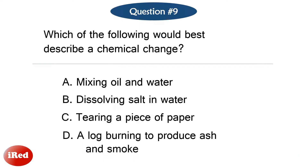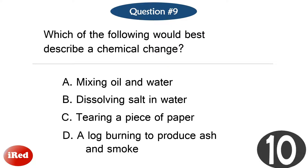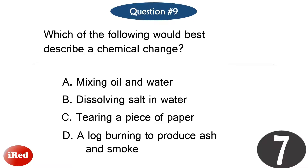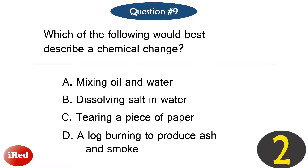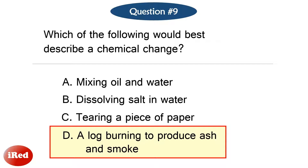Question number nine. Which of the following would best describe a chemical change? The correct answer is letter D, a log burning to produce ash and smoke.